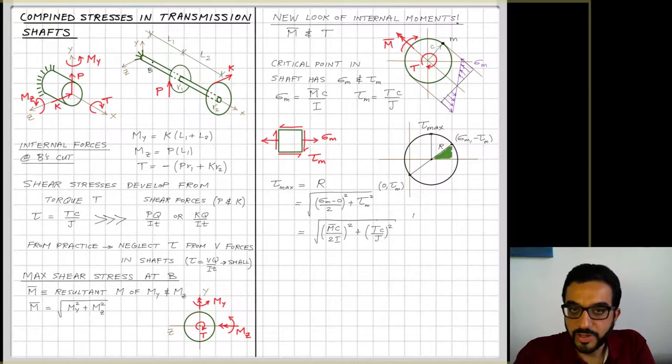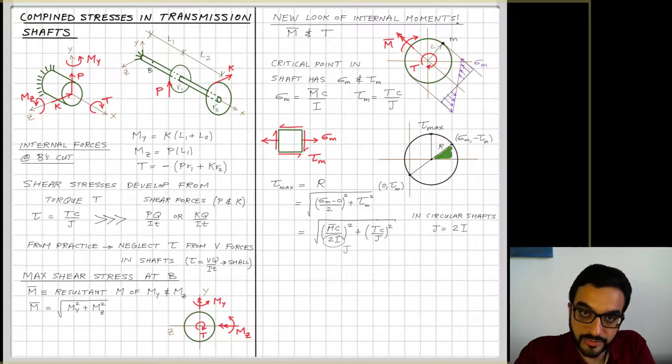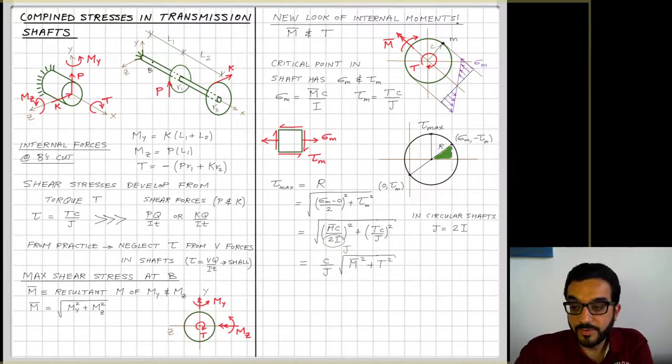And I will end up here if I plug in σm to be equal to M̄c over I. And I also remember that in circular sections, Ix, or in this case Iy and Iz, are the same and they're called just I. And the polar moment of inertia J is equal to Iy plus Iz, which in this case is just basically 2I.